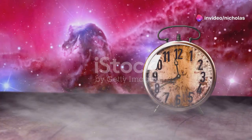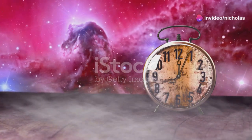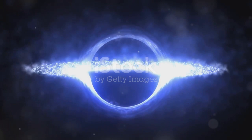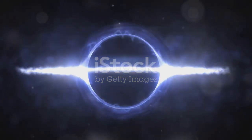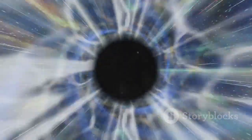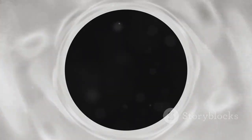Time, that relentless river that seems to flow at a constant pace, well, it doesn't play by the same rules near a black hole. You see, according to Einstein's theory of general relativity, gravity affects the flow of time. The stronger the gravitational field, the slower time moves. And since black holes have the strongest gravitational fields in the universe, time near them behaves very strangely indeed.